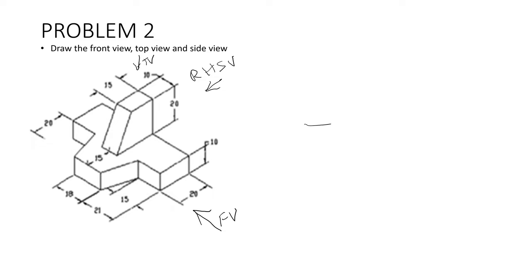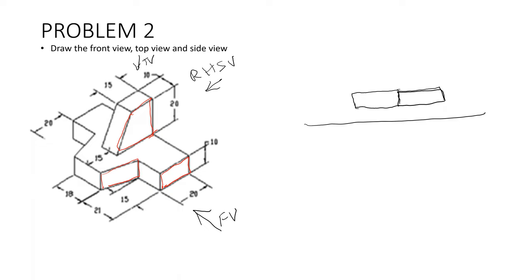Let us plot a reference line first, then we are going to draw the front view. The highlighted components for the front view are: first rectangle, then the second rectangle, and the quadrilateral. Only these three shapes are visible. We can make it here. The same shapes have been drawn — the first rectangle, then the second rectangle which is slightly sloped, and the third one, which is the quadrilateral. These three shapes have been drawn. This is your front view.